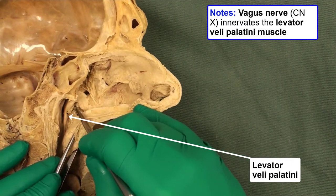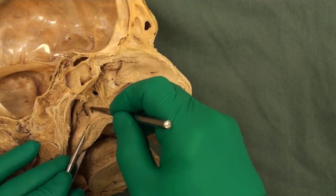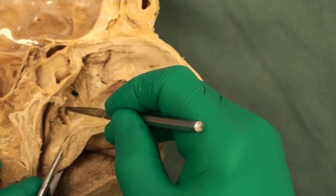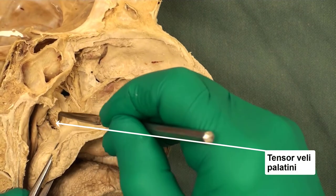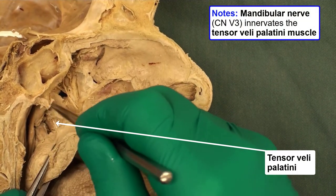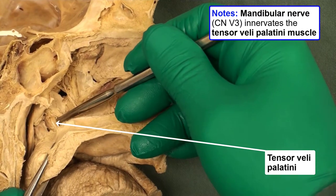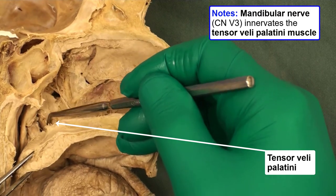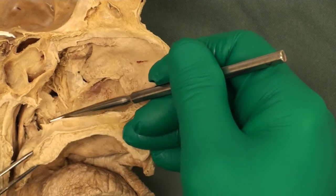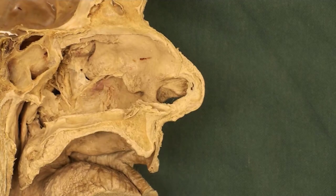The second muscle, anterior to that, is the tensor veli palatini. A useful landmark is that it has a shiny tendon. My probe is under the tensor veli palatini — it goes down and then horizontally comes to the soft palate, pulling the soft palate to the sides. So these are the two muscles associated with the opening of the eustachian tube.